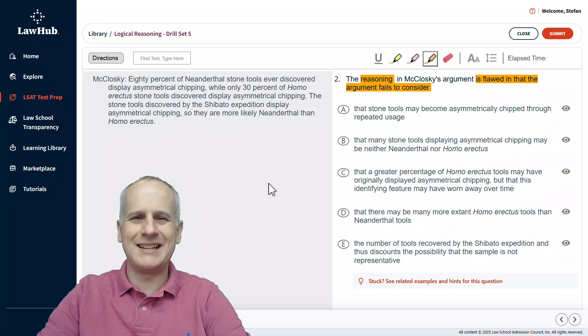As an identify the flaw question, this is one of our big four most predictable question tasks, especially if we're looking at it in a real life scenario. We're going to read McCloskey's statements with our highlight tool still selected so that we can identify and mark what the explicit conclusion is as soon as we recognize it.